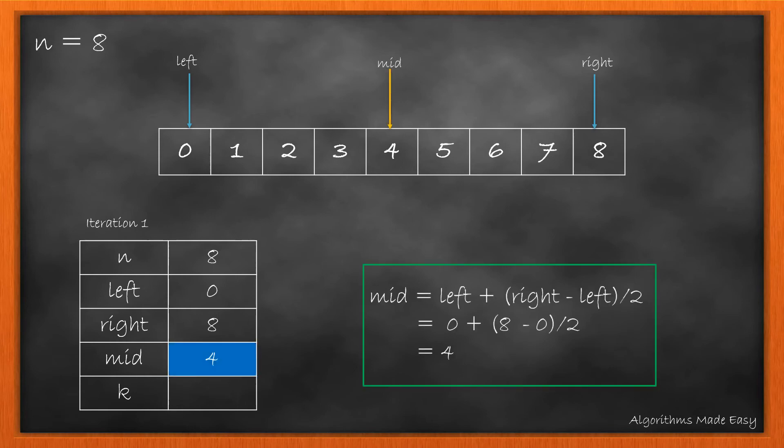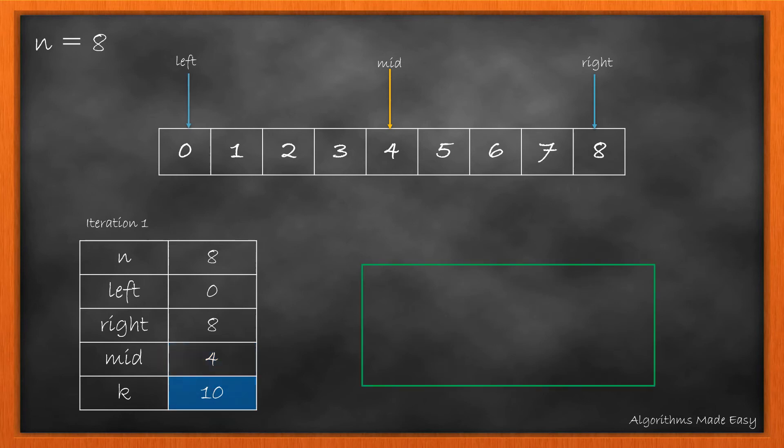We will calculate mid which comes out to be 4. And then, we calculate k which is 10. Now, we will compare the values for k and n. As k is greater than n, we shift right to mid minus 1.